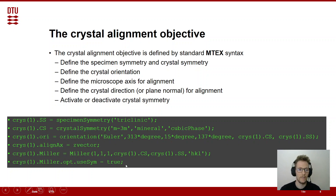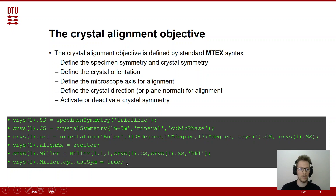That's basically everything we need to define the alignment objective. We can define up to two alignment objectives — aligning three directions with three microscope axes does not make sense, because with two directions we already have the full positioning of the crystal defined.